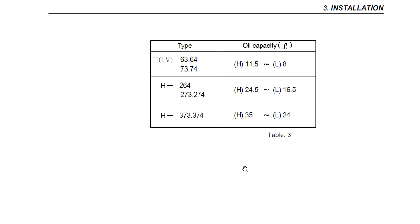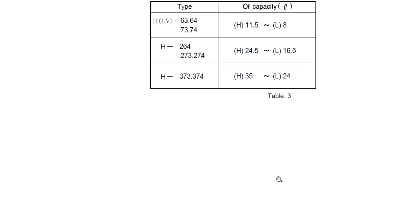Here we can see, depending on the type of air compressor which you can determine from the label installed on the front, you can see oil capacities from low level to high for each type. There is a table available in the manual.